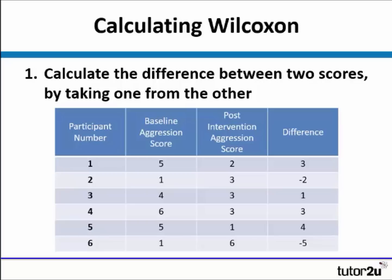Breaking this down step by step, we first calculate the difference between the two scores: 5 minus 2 is 3, 1 minus 3 is minus 2, 4 minus 3 is 1, and so on. It's really important that you are consistent in the way you take one score from the other, because otherwise it's going to lead to a lot of confusion later on. So these minus numbers are important.